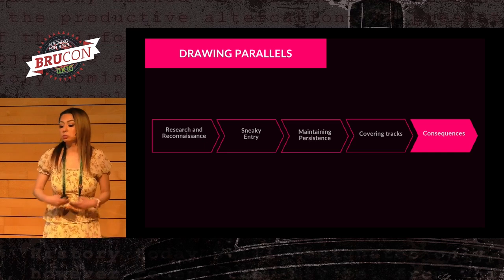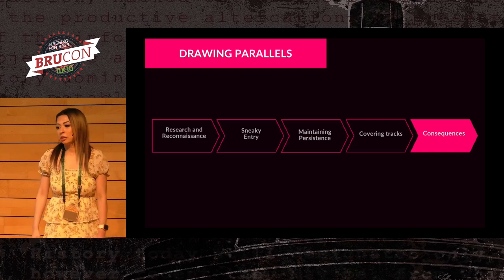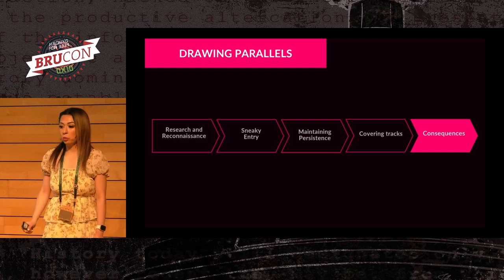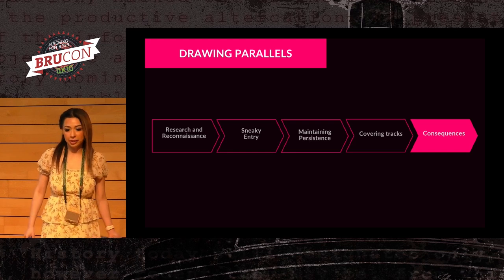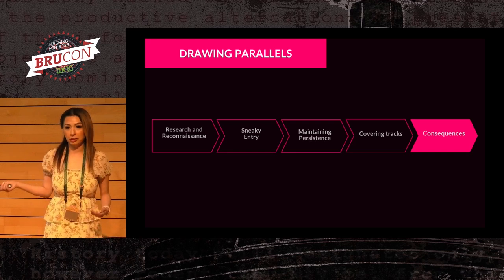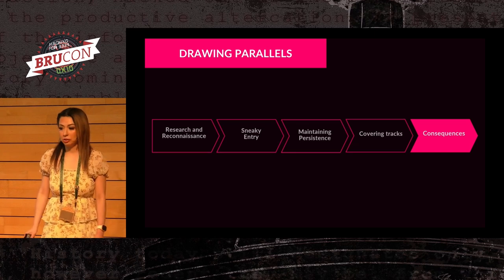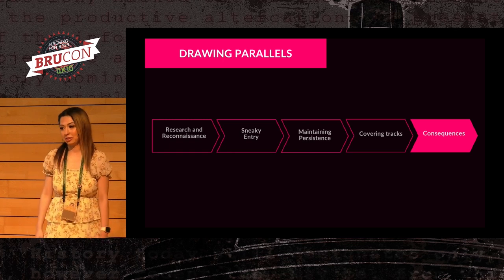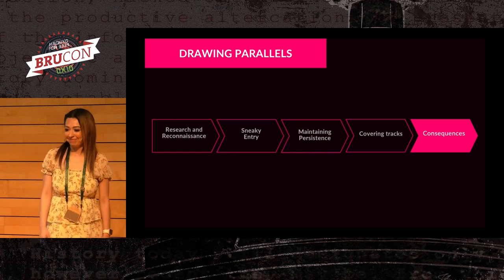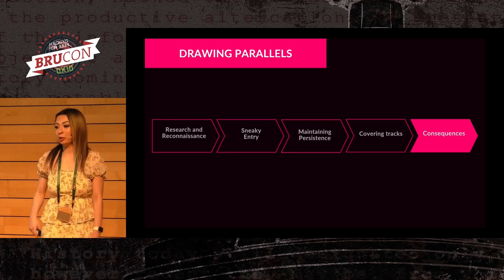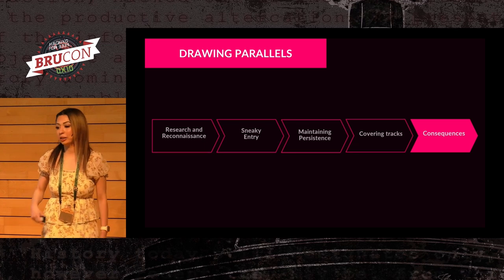It was all openly available information, including their home addresses. And once they found their homes, they broke in, but they didn't really overcomplicate things. It was just simple ways to break in — they didn't force any locks or break any windows. They even said that when they broke into Paris Hilton's home, they found a key under the mat. Thanks to that, they were able to maintain persistence and keep coming back.